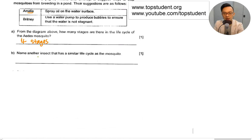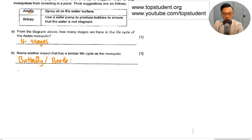Name another insect that has a similar life cycle as the mosquito. You can name a butterfly or you can name a beetle. Both of them have 4-stage life cycles.